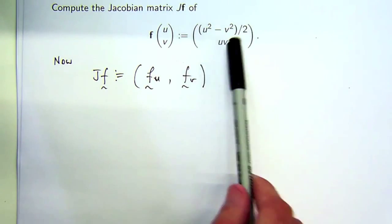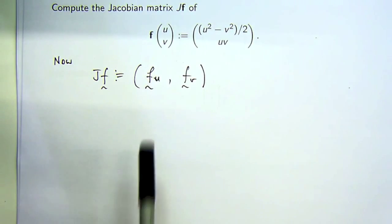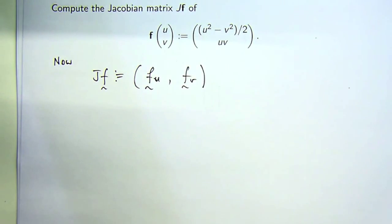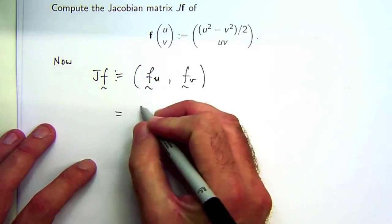You go up here, differentiate in a component-wise fashion, you'll get a vector, write it as a column, and then you have your matrix. Let's give that a go.